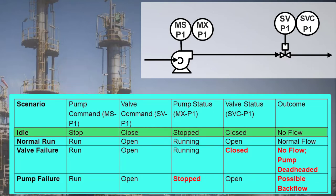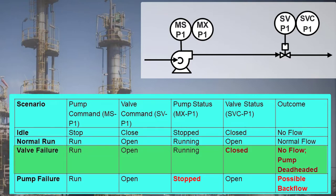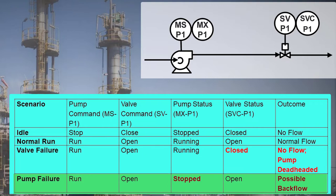Let's look at the possible outcomes in this table. If the pump is idle, the valve will be closed, blocking flow. When the pump is told to start, the valve is told to open, allowing flow. But what if the valve fails to open? The pump will be deadheaded and eventually damaged. And what if the pump fails to start? We could see backflow, which could be dangerous. We need to do better.